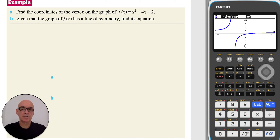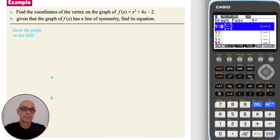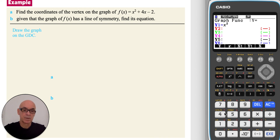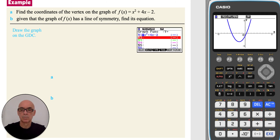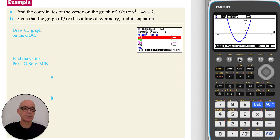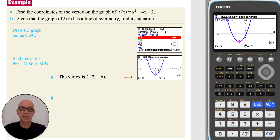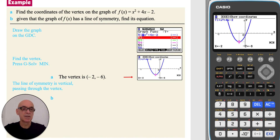In part a of this question, we're asked to find the coordinates of the vertex of the graph of the function. We draw the function by inputting x squared plus 4x minus 2 and drawing that. To find the vertex, press F5 for G-Solve and then press F3 to find the minimum point. The vertex has coordinates negative 2 comma negative 6. In part b, to find the equation of the line of symmetry, looking at the graph we see that the line of symmetry is vertical and it will pass through the vertex.